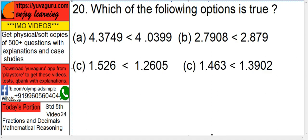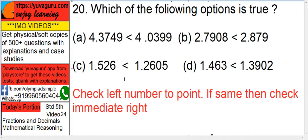Next, which of the following options is true? Means we have been given four relationships. We have to find out which one is true. Remember the basics. Always first check the left number on the point, means one number before the point.